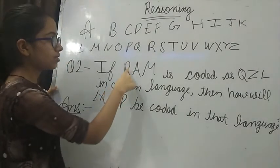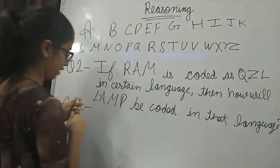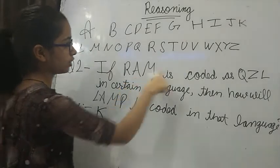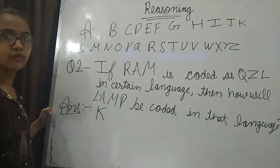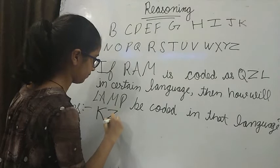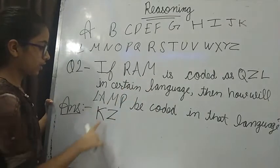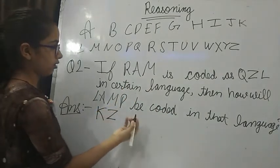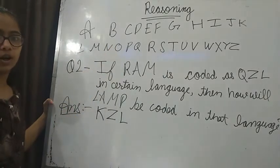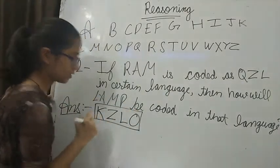Here R, Q is written before R. In the same way L, K is written before L. So we will write K. In the place of A they have written Z and Z is written before A. So in the place of A we will also write Z. In the place of M they have written L because L comes before M. So here also we will write L. In the place of P we will write O because O comes before P. So KZLO, this is our answer.